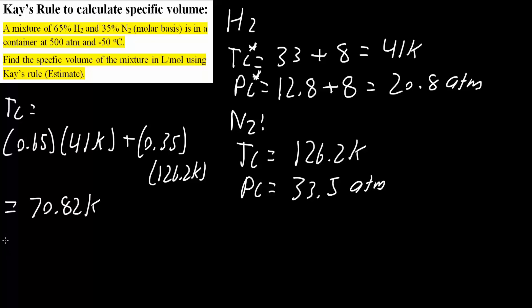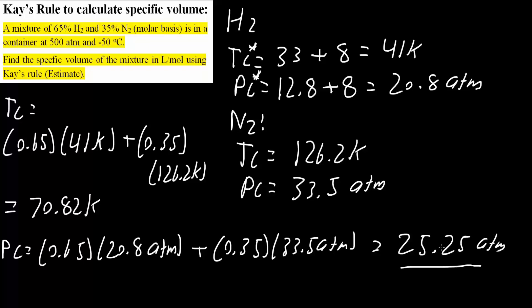Likewise, we do PC. Same exact idea. You have 0.65 times the PC value for hydrogen, which was 20.8 atmospheric pressure, plus 0.35 times 33.5 atmospheric pressure, and we would get 25.25 ATM. Now, the two numbers we just calculated, or as a reminder, are called the pseudo-critical constants.